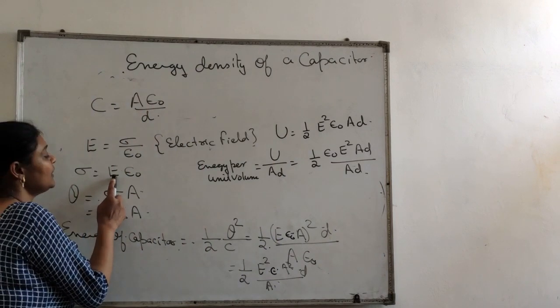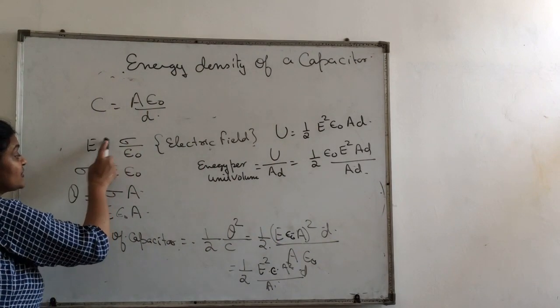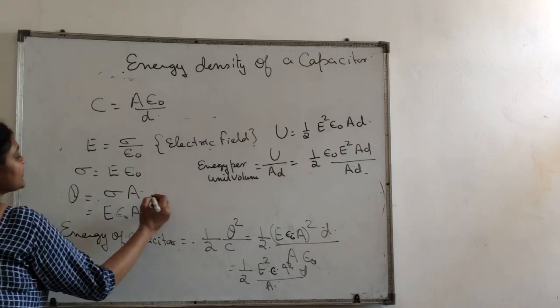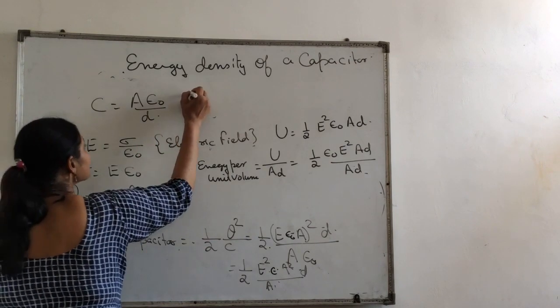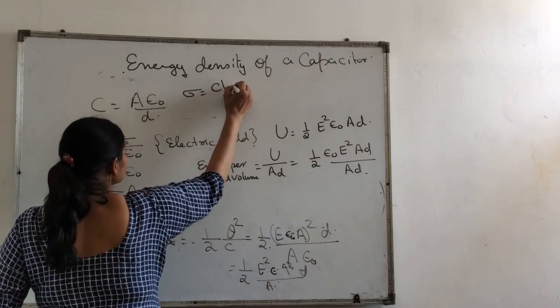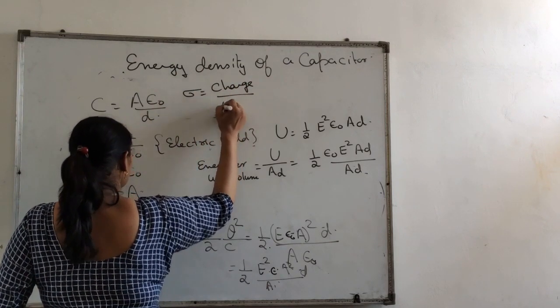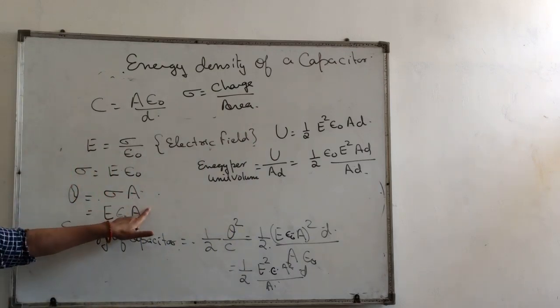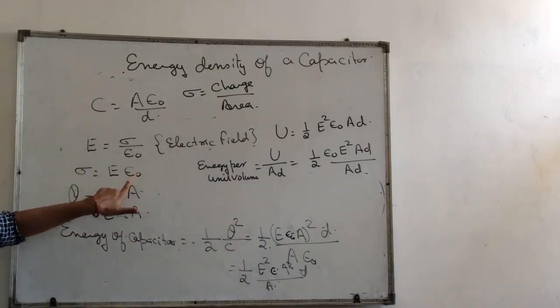Electric field between the plates of the capacitor will be sigma upon epsilon naught. So sigma is equal to E into epsilon naught. I have just given a cross multiplication, nothing else. In that case, surface charge density is charge per unit area.